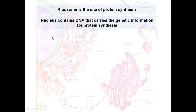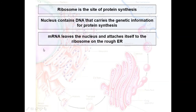Di sini, kalau kita nak buat protein, kita perlukan maklumat genetik kerana setiap protein yang dihasilkan itu mempunyai maklumat genetik yang berbeza dengan protein lain. Dalam erti kata lain, setiap protein ini unik. Jadi maklumat genetik yang ada pada DNA akan di-fotocopy untuk menghasilkan molekul RNA atau kita panggil sebagai messenger RNA. Boleh faham setakat ini?